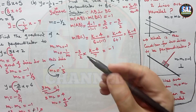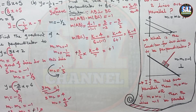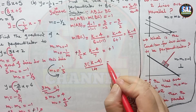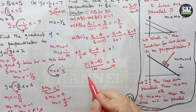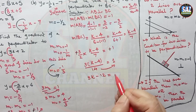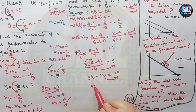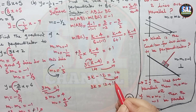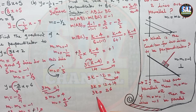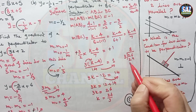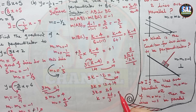The minus signs cancel, leaving 3 times (k minus 4) over 14 equals 1. Shifting 14 to the other side, 3k minus 12 equals 14, applying the distributive property. To find k: shift 12 to the other side, giving 3k equals 12 plus 14, so 3k equals 26, and k equals 26 by 3. Dividing, 26 by 3 gives 8 remainder 2, so k equals 8 and two-thirds.